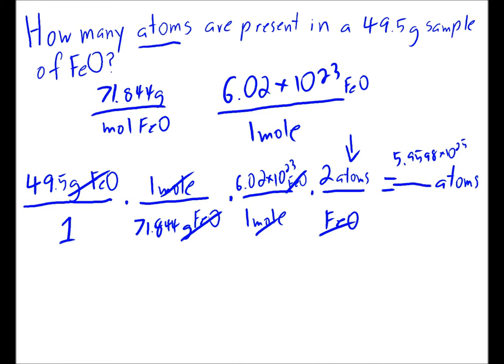5.9598 times 10 to the 25th power. That'll go above our fraction—I'm running out of room there. And then down below, we can skip our ones. They won't change our answer. You can include them if it makes you comfortable, but 71.844. Our final answer will come from dividing these two values: divided by 71.844.